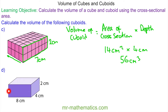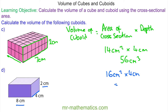For question D, I'm going to use the front face as the cross-section, which is eight by two, so 16 centimetres squared, multiplied by the depth of four centimetres, which gives 64 centimetres cubed.